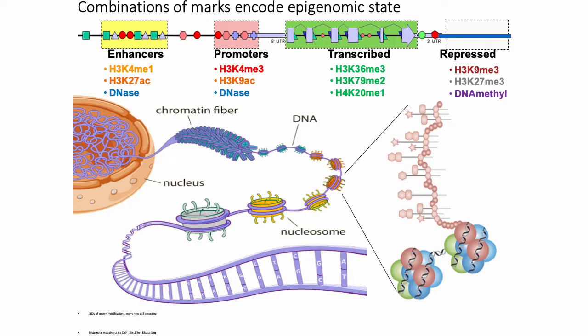This slide gives a brief summary of some of the better characterized epigenetic marks and what kinds of elements they tend to be associated with. Some marks associated with active transcription include K36 trimethylation, K79 dimethylation, and K20 monomethylation. Assays for measuring chromatin accessibility, labeled here as DNase, are also included — generally speaking, accessible chromatin is associated with things like enhancers, promoters, or active transcription.